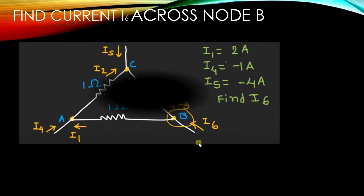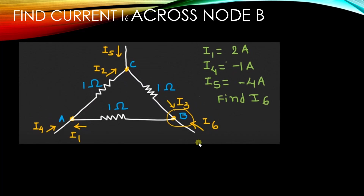We can explain Kirchhoff's Current Law with an example. In this example, there are three nodes in the circuit: node A, node B, and node C, with different currents shown. At node A, the currents are I4, I1, and I2, where I1 and I4 are the incoming currents and I2 is the outgoing current. At node C, I5 is the incoming current and I3 is the outgoing current.